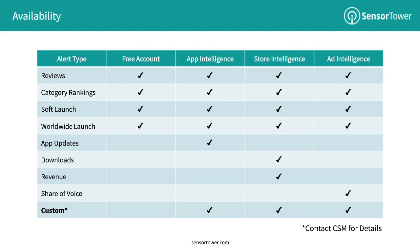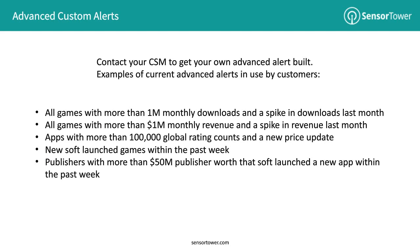We do have the ability to build a specific alert for your use case if you're an enterprise customer, and we encourage you to get in contact with your CSM if you have ideas around a specific alert you'd like to build. For instance: all games with more than one million monthly downloads that have also had a spike in downloads in the last month. It's less about tracking a specific publisher or app and more about setting up criteria — if any app meets that criteria, we'll send you a list of those apps.